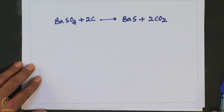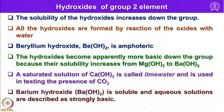Let us look into the hydroxides of group 2 elements. The solubility of hydroxides increases down the group. All hydroxides are formed by reaction of the corresponding oxides with water. Note that while hydration enthalpy decreases down the group, the solubility of hydroxides increases. Beryllium hydroxide is amphoteric in nature, and the hydroxides become apparently more basic down the group because their solubility increases from magnesium hydroxide to barium hydroxide.